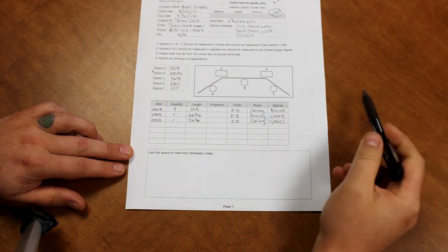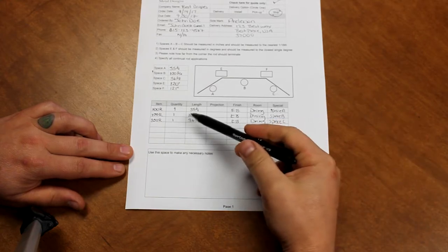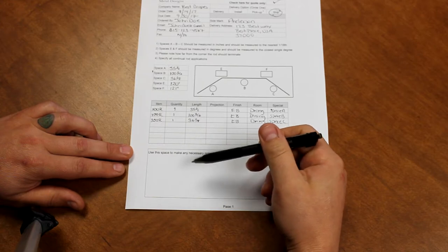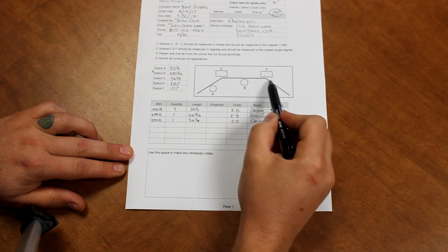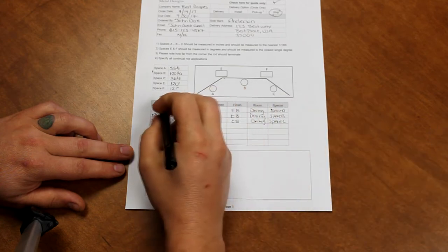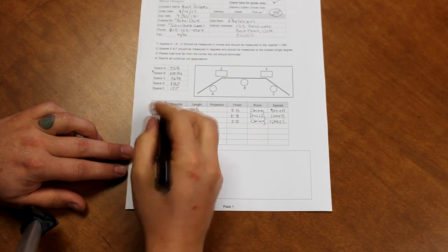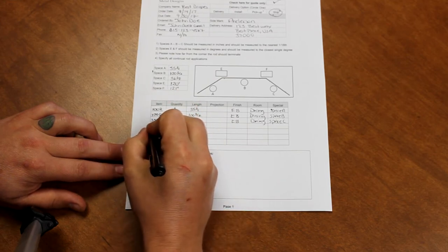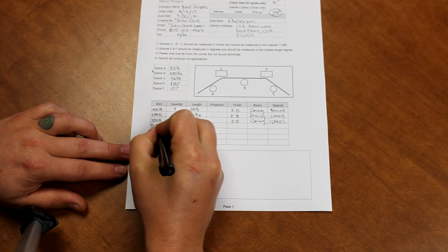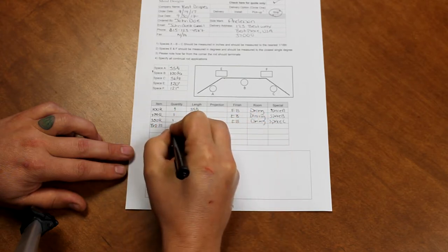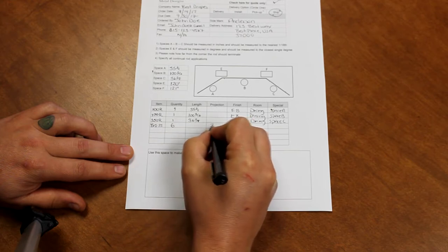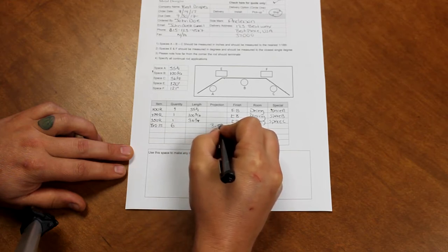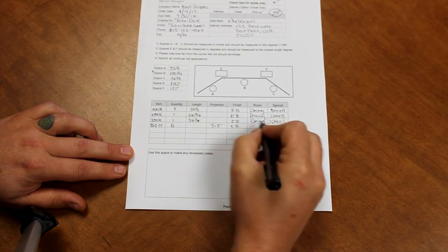Now that we have all the rods taken care of, we will start filling out the rest of the order form for our hardware, which is our brackets first. We have indicated 6 of those in each of those spaces. So it's item number BR135. Our quantity will be 6. Length is unnecessary. Projection is 3 1/2 inches. Finish will be English brown. The room is the dining room. And no special instructions are needed.